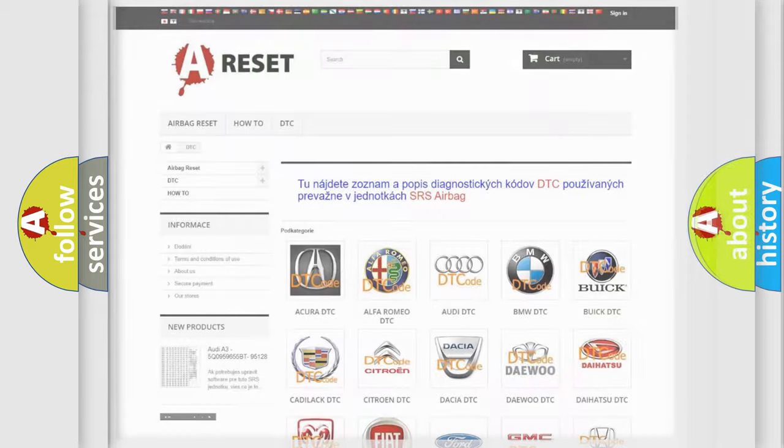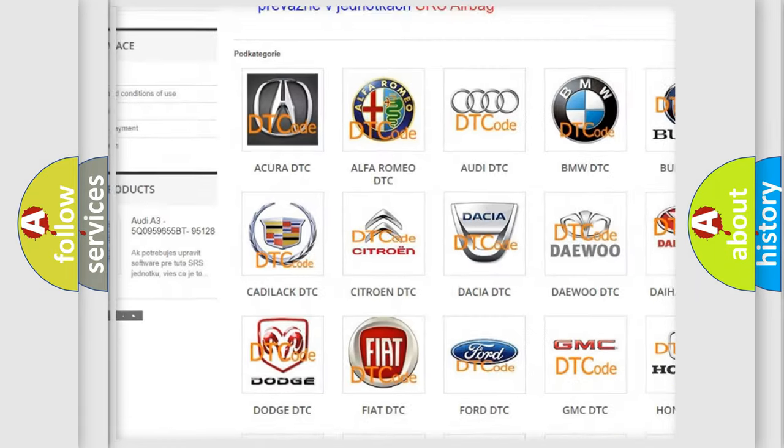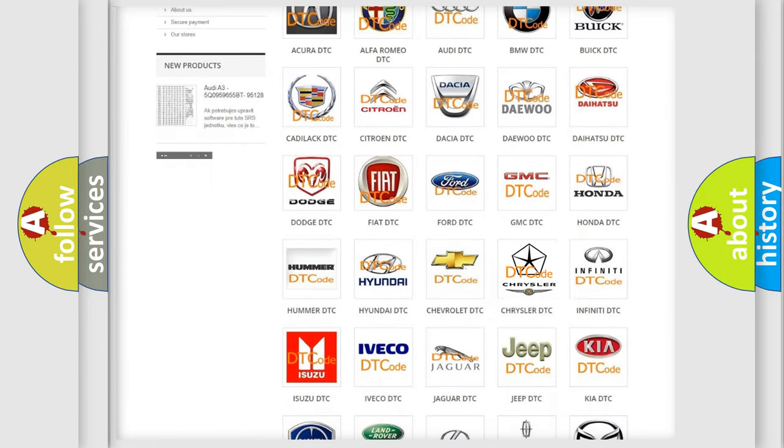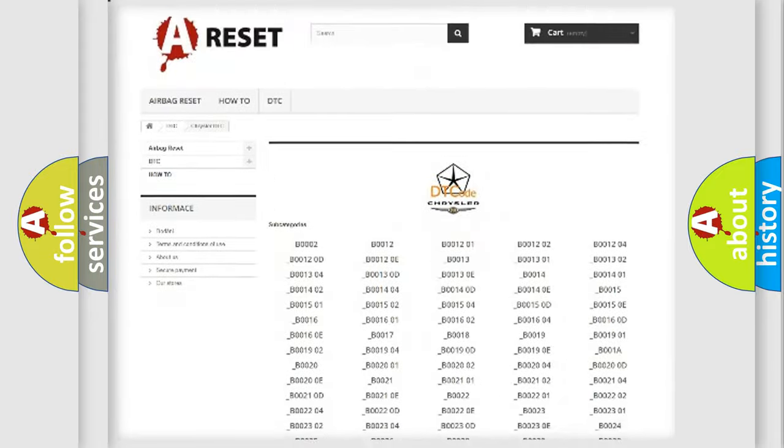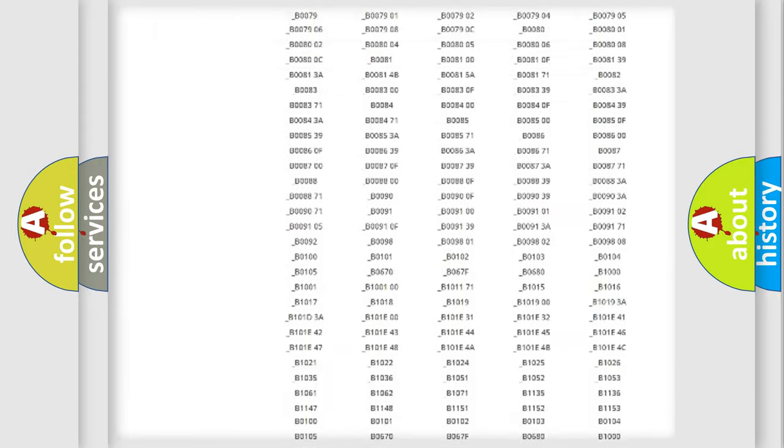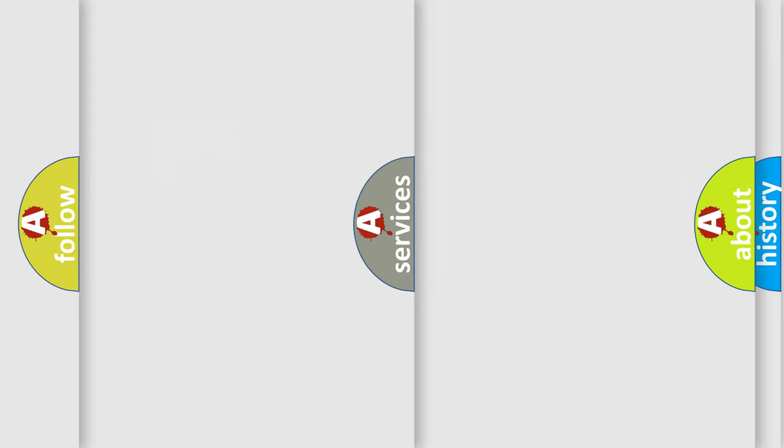Our website airbagreset.sk produces useful videos for you. You do not have to go through the OBD2 protocol anymore to know how to troubleshoot any car breakdown. You will find all the diagnostic codes that can be diagnosed in Chrysler vehicles, also many other useful things.